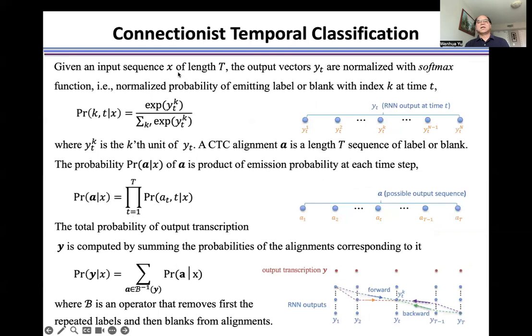Given an input sequence X of length T, the output vector yt is normalized with softmax function, namely, normalized probability of emitting label or blank with index k at time t is in this formulation.